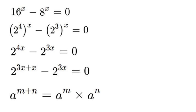So that means that we can rewrite our equation to look like this. We can have 2 to the power of 3x times 2 to the power of x minus 2 to the power of 3x equals 0.